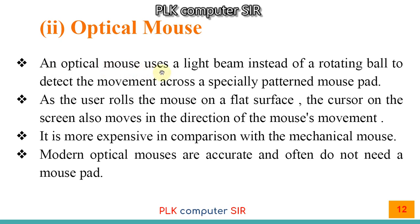An optical mouse uses a light beam instead of a rotating ball to detect movement across a specially patterned mouse pad. As the user rolls the mouse on a flat surface, the cursor on the screen moves in the same direction. It is more expensive than a mechanical mouse, but modern optical mice are accurate and often do not need a mouse pad.